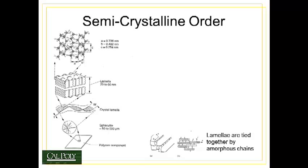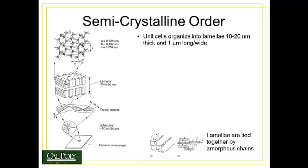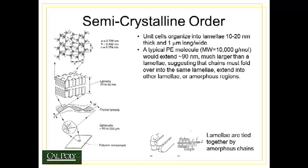So how do semi-crystalline polymers organize themselves? First we have the basic unit cell, which is orthorhombic in the case of polyethylene. Unit cells organize into lamellae, which are about 10 to 20 nanometers thick and about one micron long and wide. The chains run through the lamellae, and then you have amorphous sections of the chain which wrap around the outside of the lamellae and reconnect into the lamellae somewhere else. A typical polyethylene molecule would extend approximately 90 nanometers — much larger than the individual lamellae — so the individual molecule must exit the lamellae, form an amorphous section, fold over, and then return back into the same lamellae or possibly extend into another lamellae. The lamellae are connected to one another by these amorphous sections of the polymer chains.